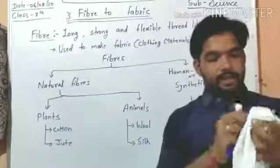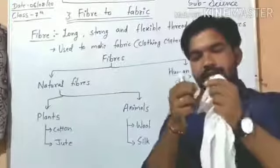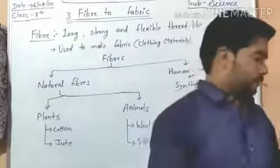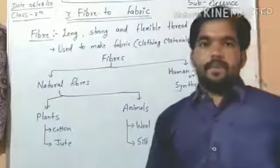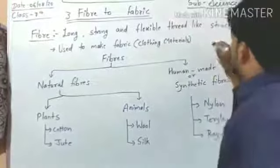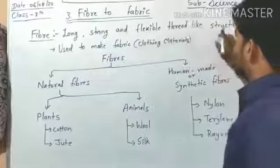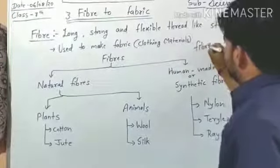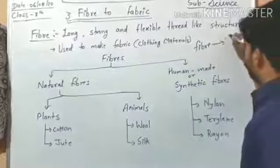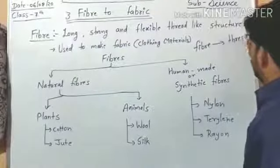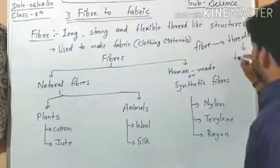This is a handkerchief and this is a thread. This thread is made up of fibers. Fibers are long, strong, and flexible thread-like structures. Fiber is the smallest unit — with the help of fiber we can make threads, and with the help of threads we can make fabrics.